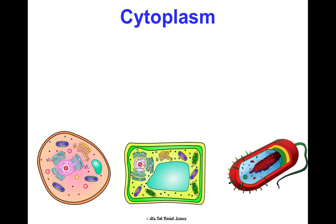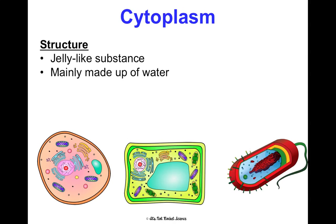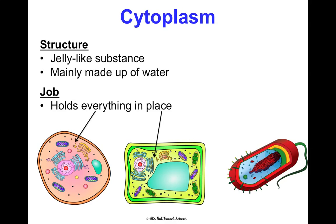Cytoplasm is a jelly-like substance mainly made up of water. Its job is to hold everything in place — it's the fluid space you can see in all types of cells.